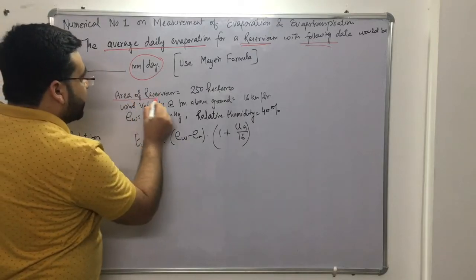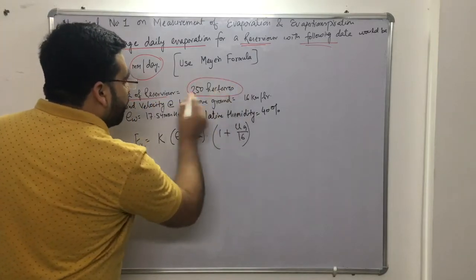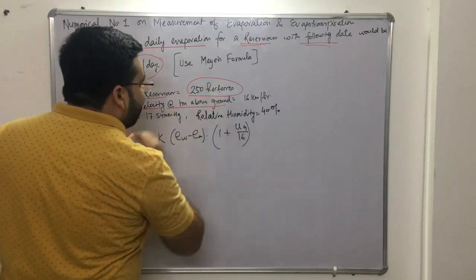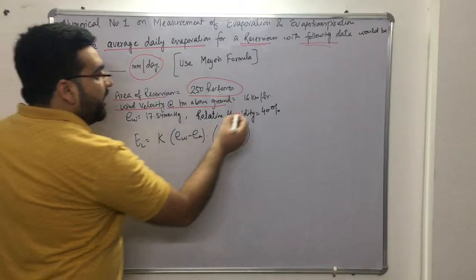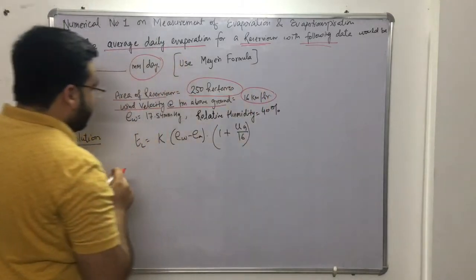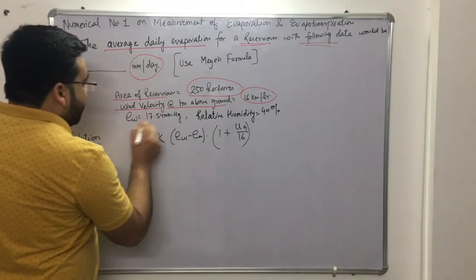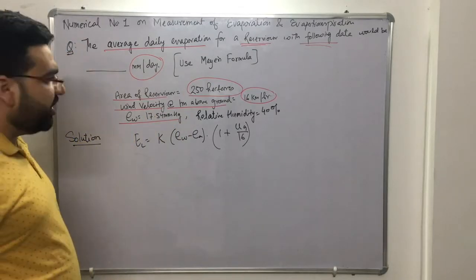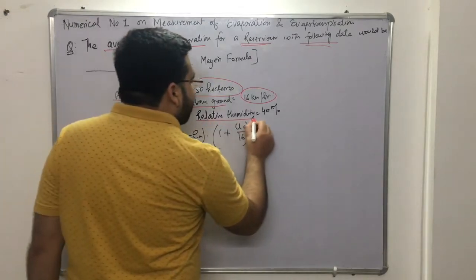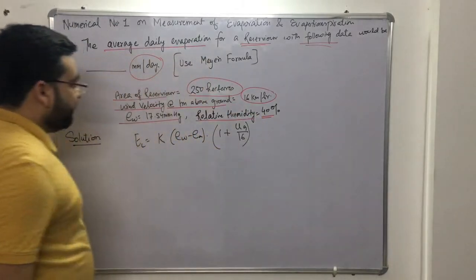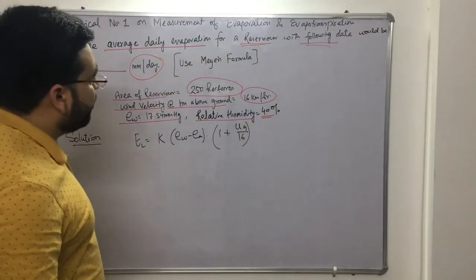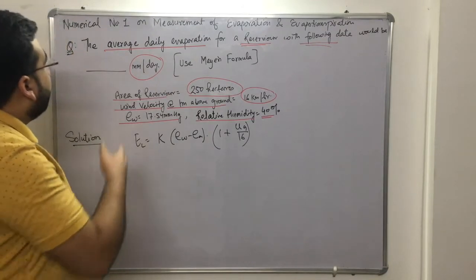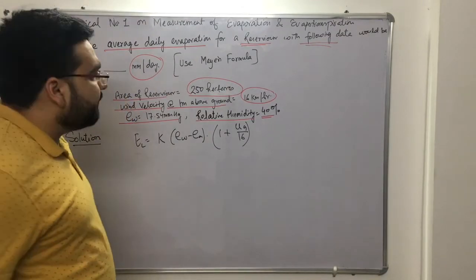The data given is: area of the reservoir is 250 hectares, wind velocity at 1 meter above ground is 16 kilometers per hour, saturated vapor pressure ew is 17.54 mm of Hg, and relative humidity is 40%.